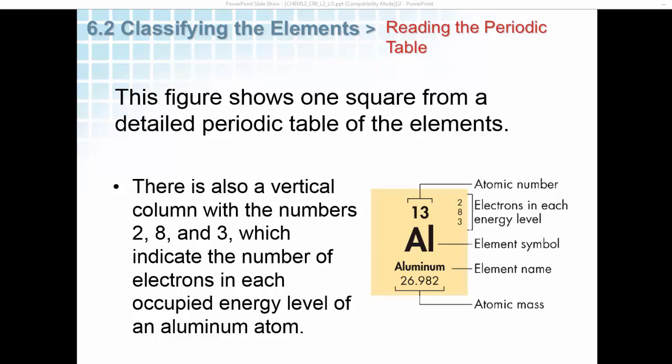There is also a vertical column with the numbers 2, 8, and 3, which indicate the number of electrons in each occupied energy level of an aluminum atom.